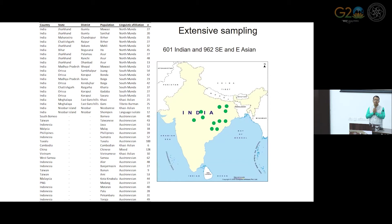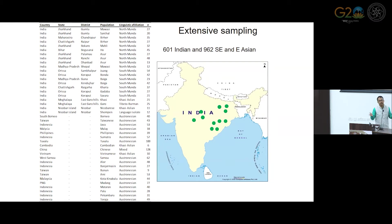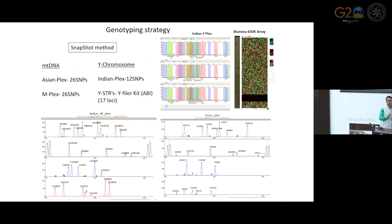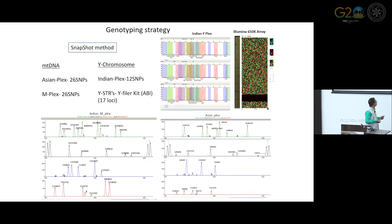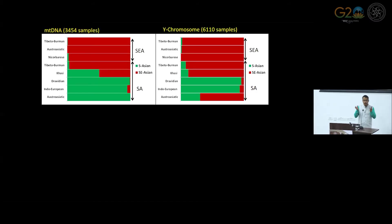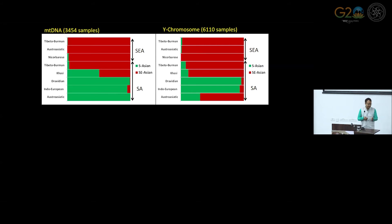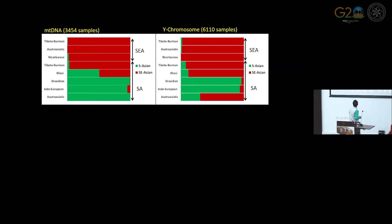We used more than 600 samples from India and 900 samples from Southeast and East Asian populations, compared with all other populations. We used YSTRs, autosomes, and mitochondrial DNA — all systems that have been previously used — along with some additional techniques in our analysis.